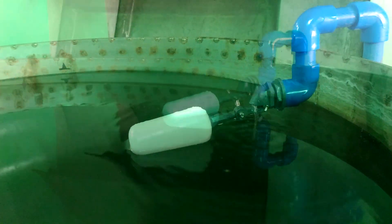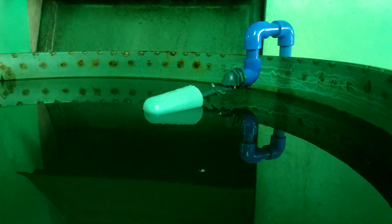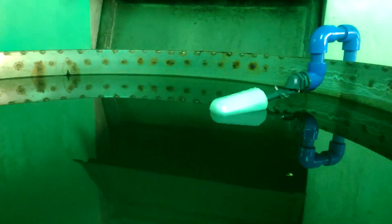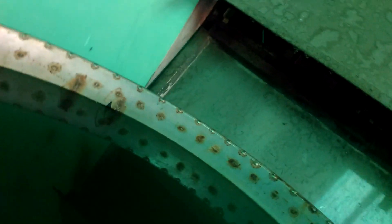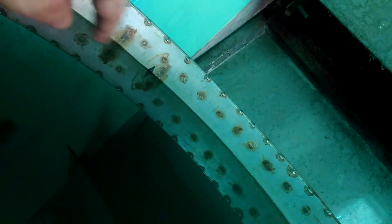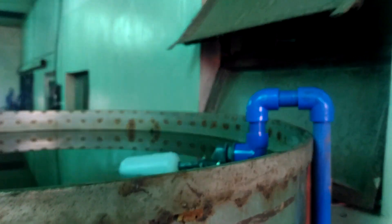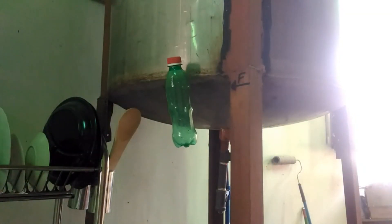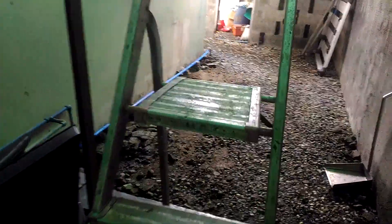Meanwhile, if you're interested to get a float valve yourself, check out the resources section in the description below. And talk about precision. The float valve automatically and completely stops water coming in at the exact level as our mark. And I don't see any leak at the elbow joint and the valve itself. Perfect! Now that we have an automatic float valve and a water tank level indicator installed, we'll no longer need to climb up and down this ladder for a very, very long time.